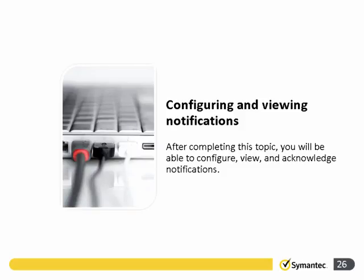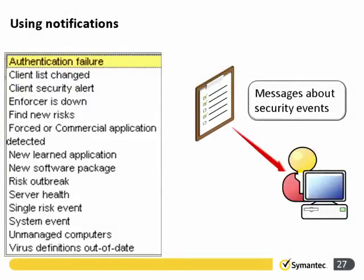Looking at notifications, there are a number of different types already configured — you just need to choose which type you wish to receive messages about. These include warnings about a new learned application, a risk outbreak, or virus definitions being out of date.